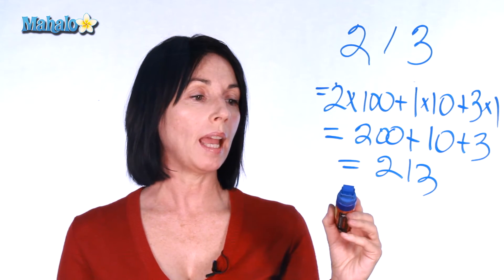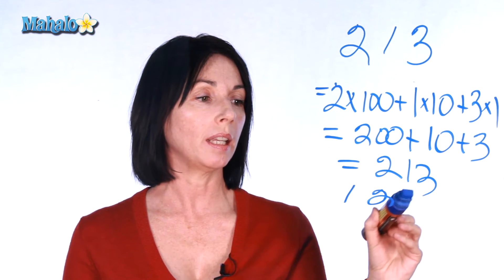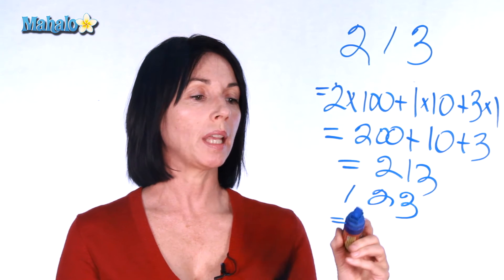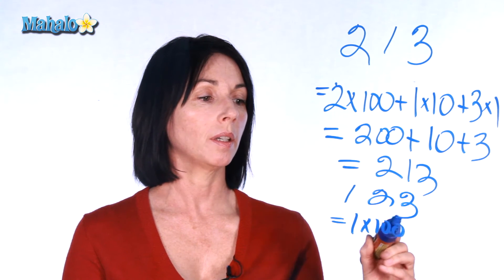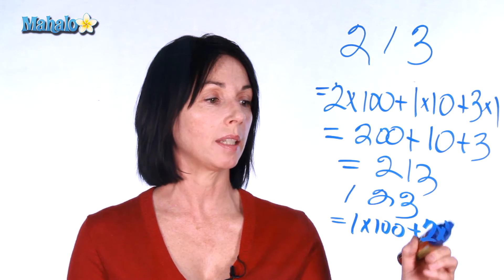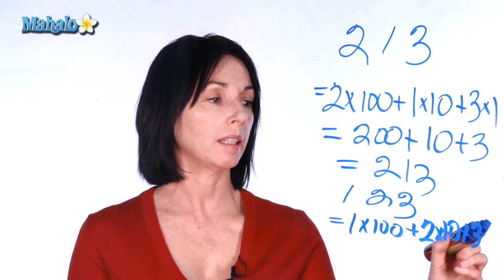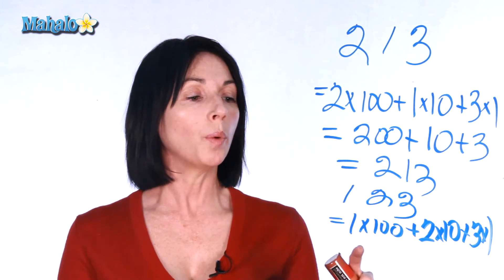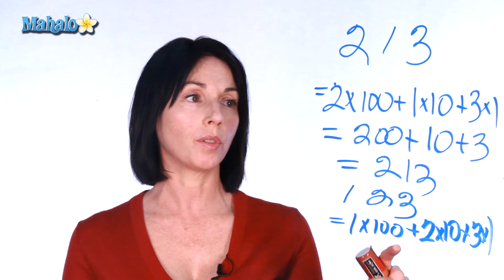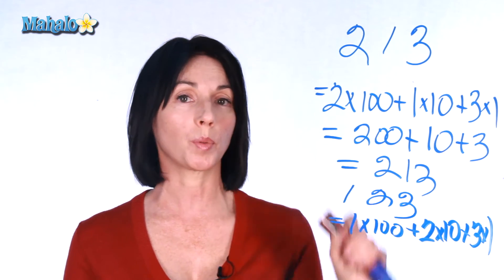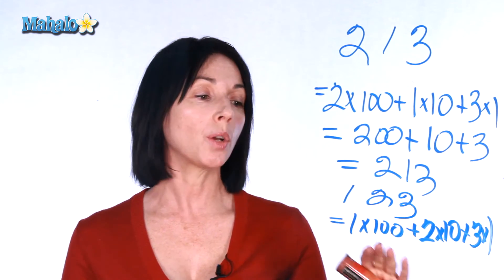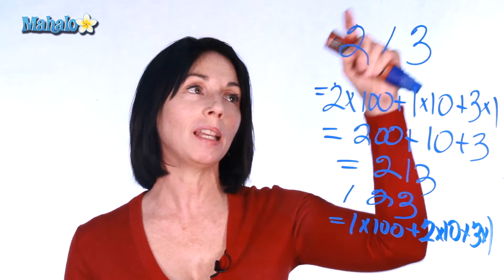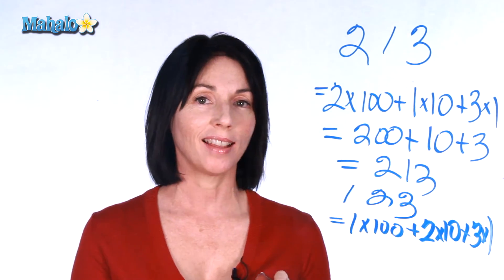For example, if we have the number 123 and we wrote it in expanded form, we would get 1 times 100 plus 2 times 10 plus 3 times 1. So in this case we only have 1 times 100, whereas here we have 2 times 100. So expanded form is actually what has led us to being able to write our numbers like that.